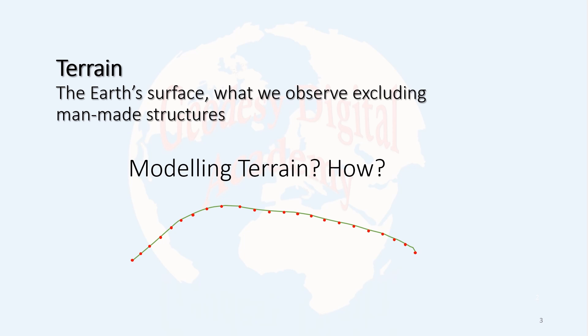There are different methods for determining the shape of the Earth terrain model. You can use photogrammetry, satellite images, survey methods, and many other methods that today are applied.